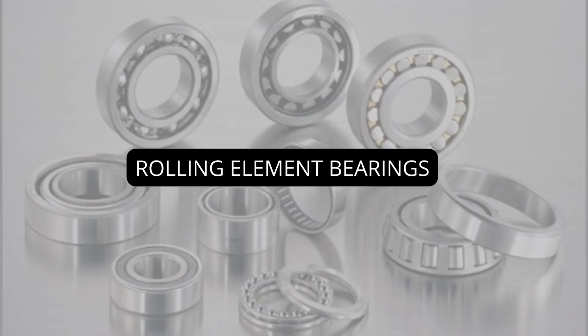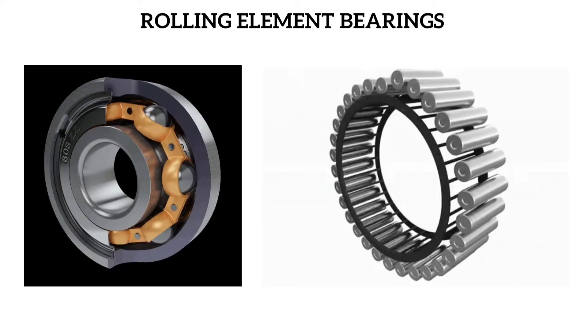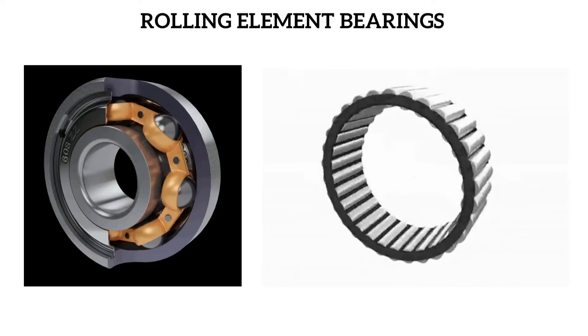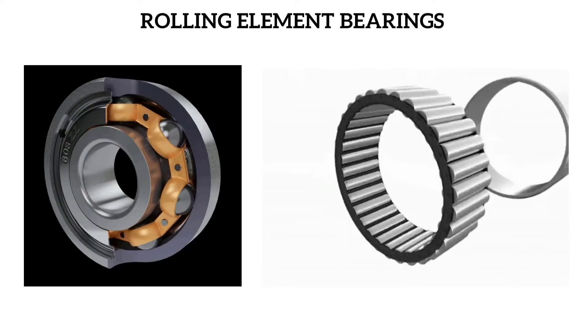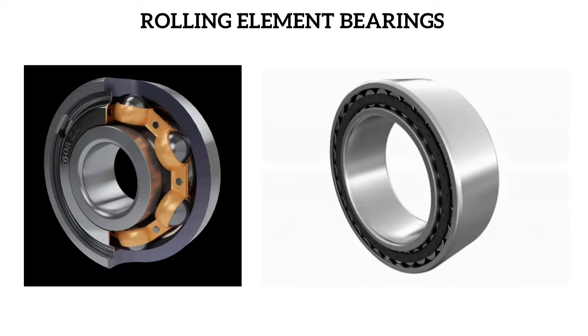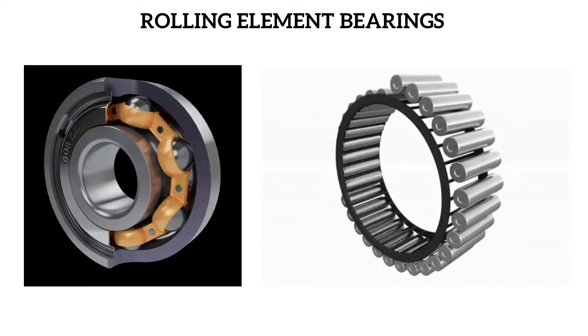A rolling element bearing is a bearing which carries a load by placing rolling elements such as balls or rollers between two concentric grooved rings called racers. The relative motion of the racers causes the rolling elements to roll with very little rolling resistance.